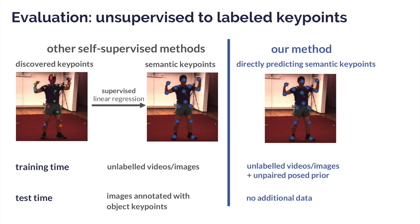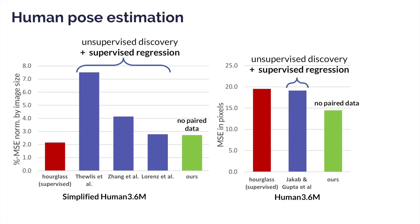Other self-supervised learning methods learn object keypoints that are not interpretable. To compare them on standard benchmarks, we need to learn a supervised linear regressor that converts the self-supervised discovered keypoints to semantic keypoints. While our method requires unpaired pose priors during training, it does not need any labeled images — since it can directly predict interpretable semantic keypoints. We outperform the state-of-the-art unsupervised landmark discovery methods on the Human 3.6M benchmark. Note that these methods discover object landmarks in an unsupervised manner and later train a linear regressor using labeled training data, whereas our method does not use any annotated images.